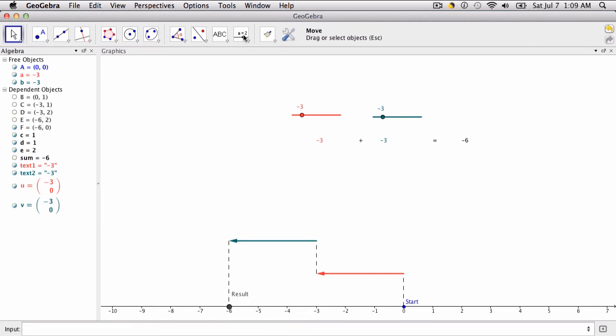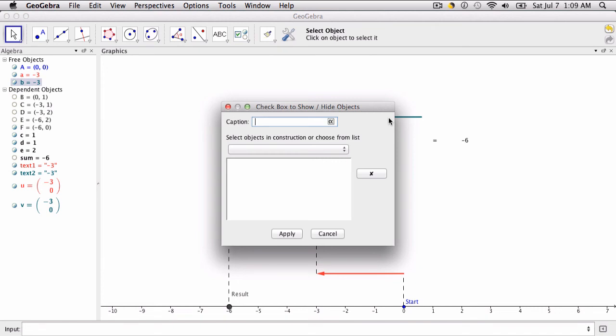And one thing we can do here, as well, is add a hide box. So the caption could say sum, and here, what we're hiding is, of course, the sum. So as we scroll through, we'll find that.